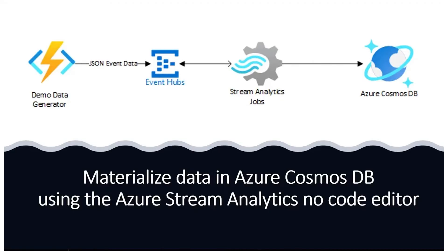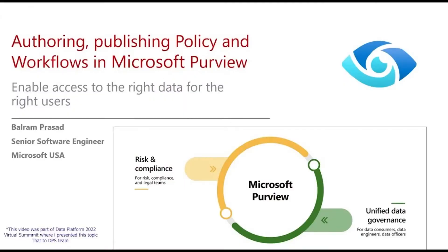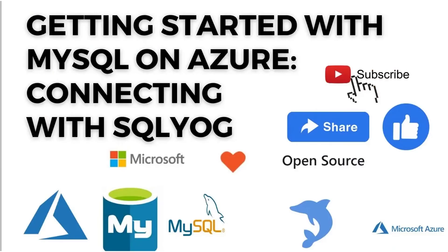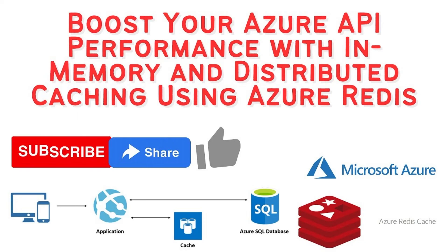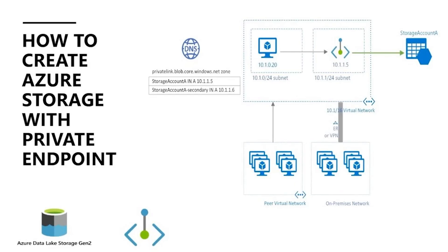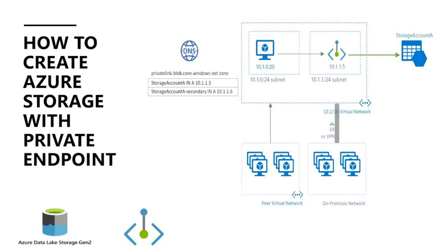We have used Azure Cosmos DB for Apache Gremlin for graph DB, and a video on storing real-time data into Azure Cosmos DB. Further topics include creating a PostgreSQL database on Microsoft Azure using client tools like PGAdmin, creating MySQL on Azure and connecting with SQL tools, using Redis inside APIs, and securing Azure Storage with private endpoints. This playlist is growing fast — please subscribe and share with your friends. Thank you!